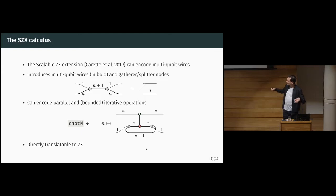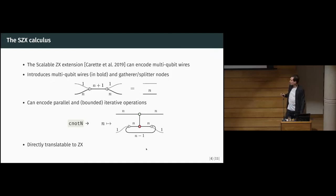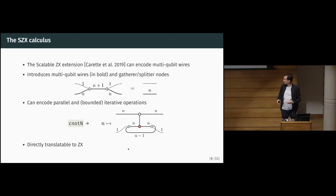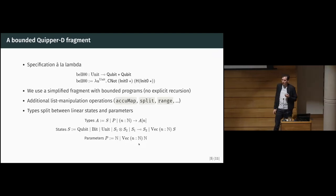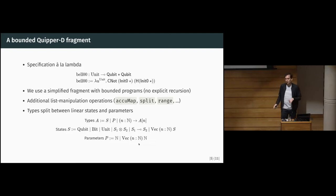Another thing to note is that the Scalable ZX calculus doesn't add any expressivity to ZX. If we have a specialized diagram — not a family — we can just copy all the things in parallel, connect the corresponding wires, and get a ZX diagram. The interesting thing is when we are able to put labels with variables there. We have this SZX representation and can do iteration, but it's not completely powerful — we're not able to, for example, encode a non-terminating program, which is something we can do in Proto-Quipper-D.